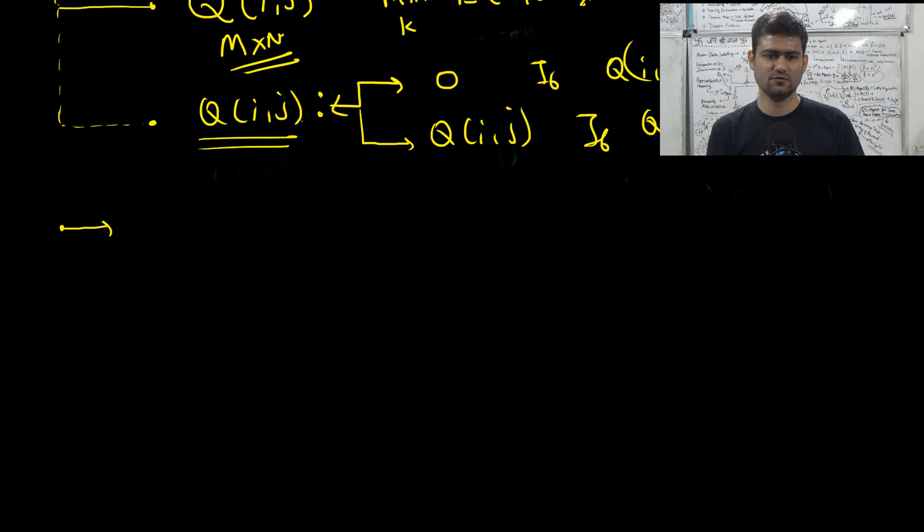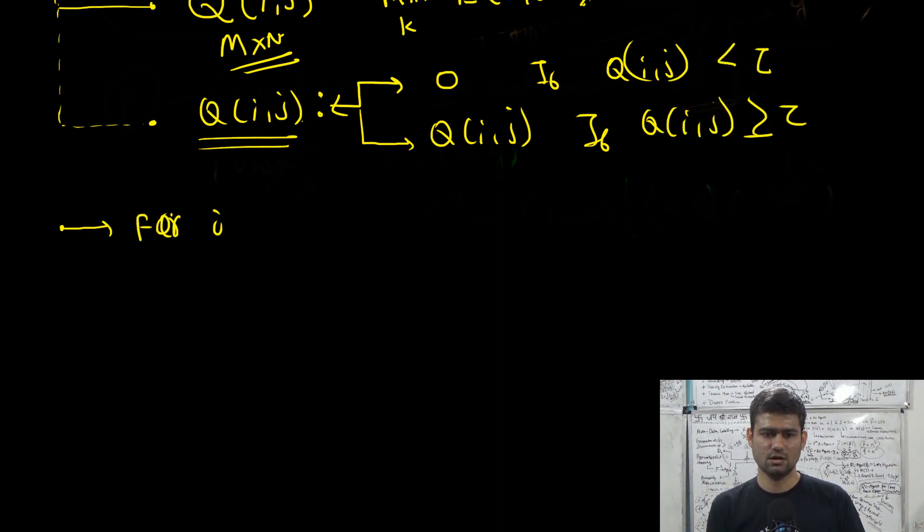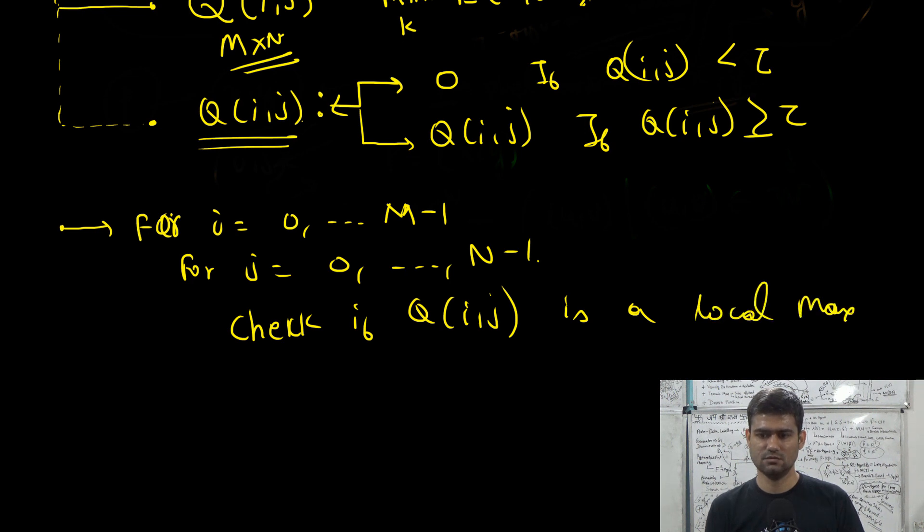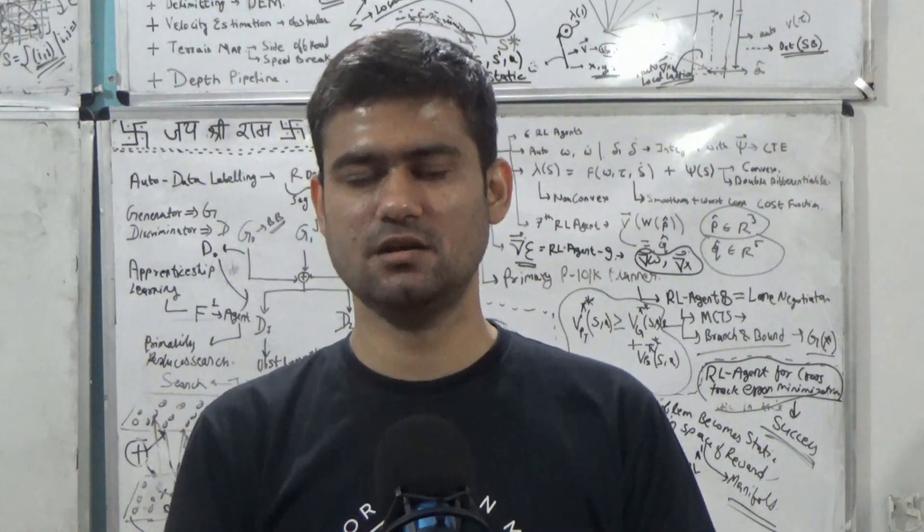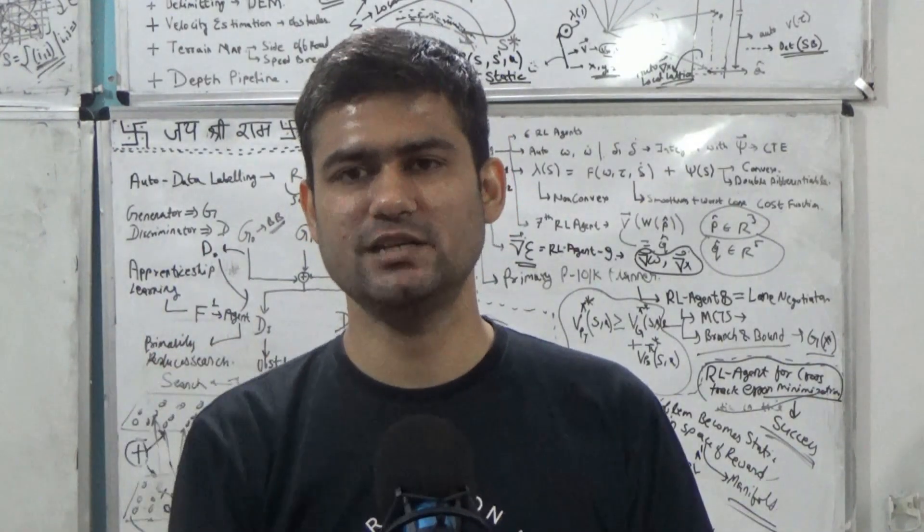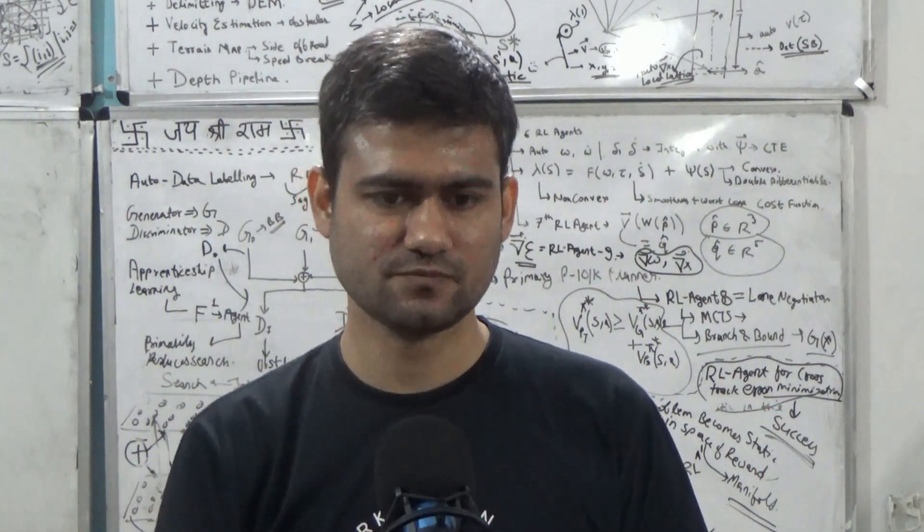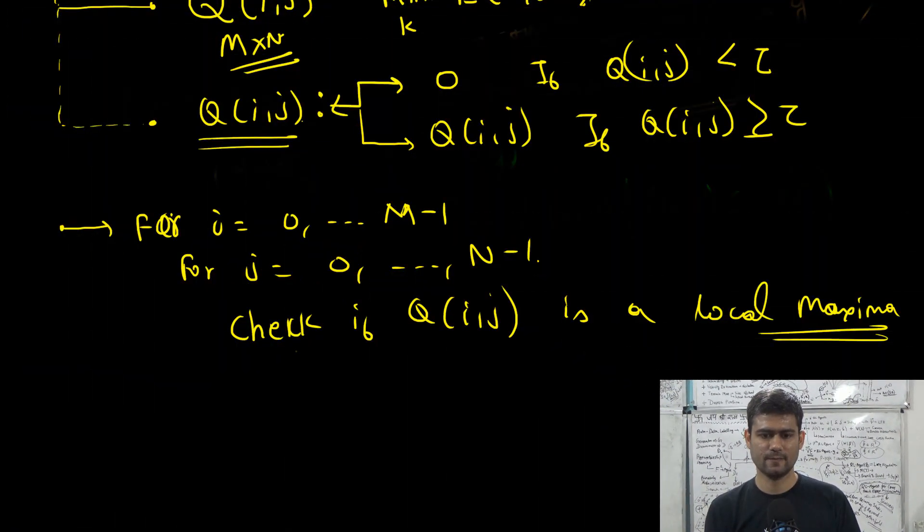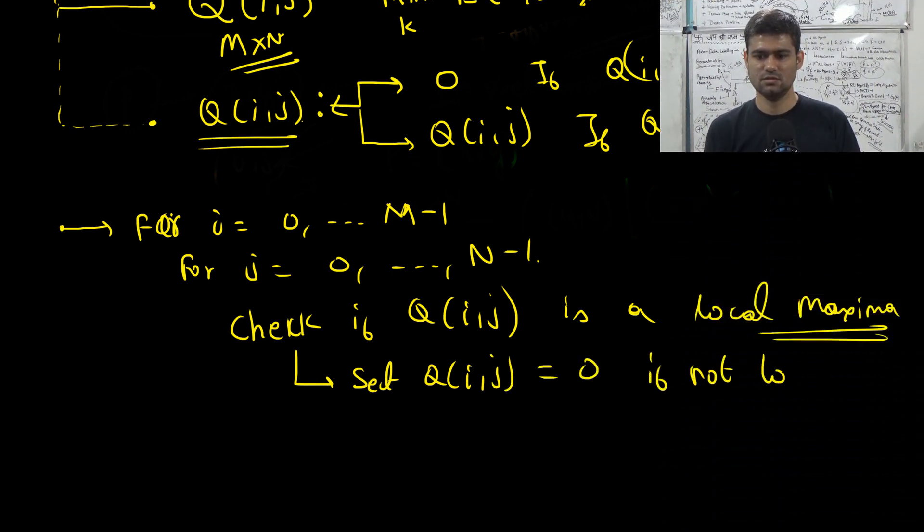Again we will begin two nested for loops for i equal to 0 to m minus 1, for j equal to 0 to n minus 1. Check if Q_ij is a local maximum. And as we have discussed in the previous lecture, we can compute the local maximum by just considering a 3 cross 3 neighborhood or a 5 cross 5 neighborhood. And we can check if Q_ij is greater than all its neighbors. If that is the case then that is a local maxima. If it is not the local maxima then we just set it to 0.